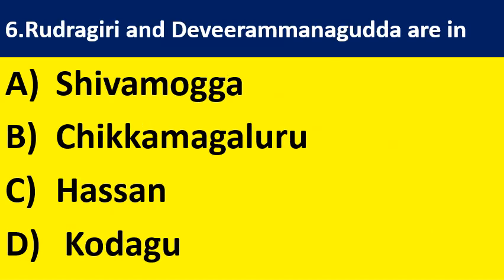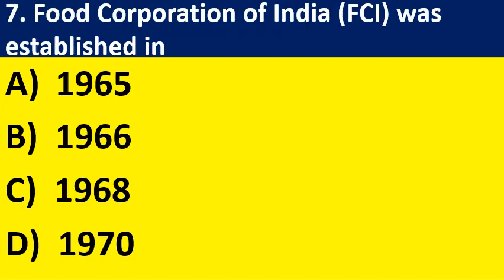Question 6: Rudragiri and Devi Ramana Gudda are in — choose one of the given districts. Question 7: the Food Corporation of India (FCI) was established in — option A: 1965; option B: 1966; option C: 1968; option D: 1970.